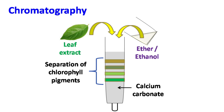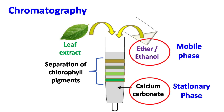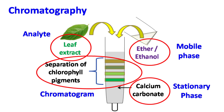The calcium carbonate packed in the column is known as the stationary phase. The mixture of ether and ethanol is known as the mobile phase. The mobile phase moves down the column along with the sample. The leaf extract or the sample used is termed as the analyte. The colorful separation of chlorophyll pigments so obtained is known as the chromatogram.